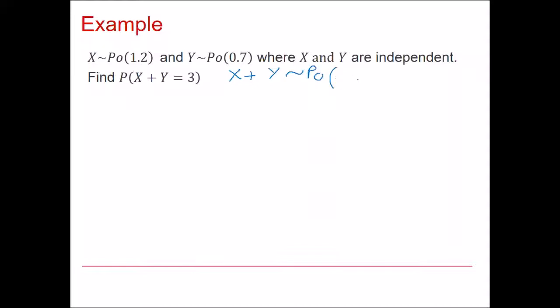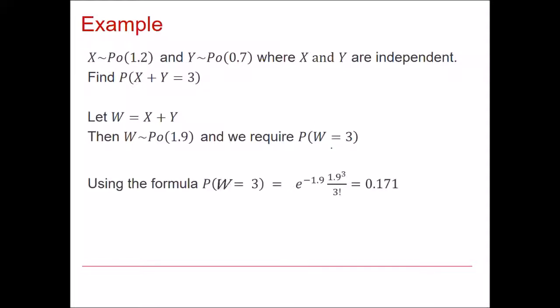And then I can simply add the two means together to give myself 1.9 and calculate the probability of this being equal to 3 using the formula as before. So here you see I've called w equal to x plus y, so I'm finding the probability w is equal to 3 using the formula, which is 0.171.